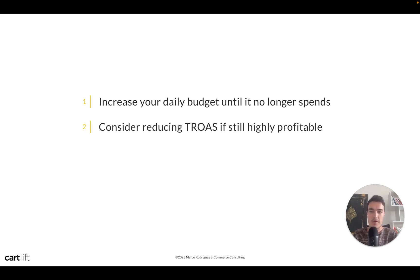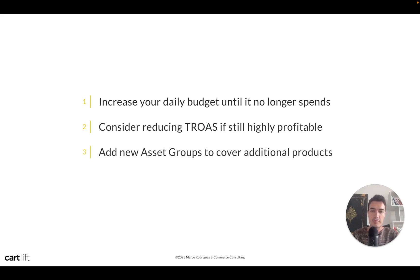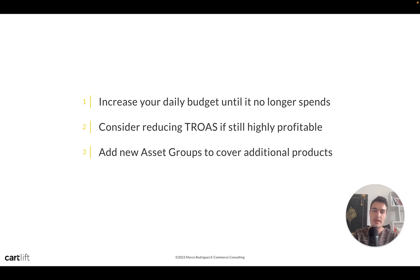Add new asset groups to cover additional products. If your PMAX campaign is centered around three categories and you left others out, now's a good time to add new categories and products — your second bestseller, for example. If you've had success with existing products, you may well have success with new ones too. Then expand your audiences for more reach.